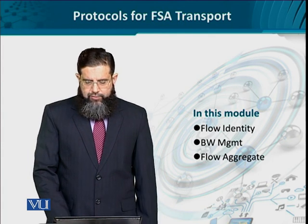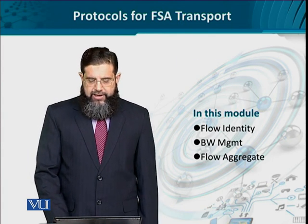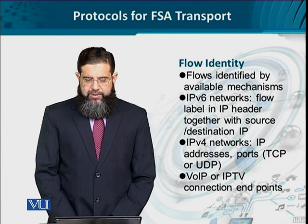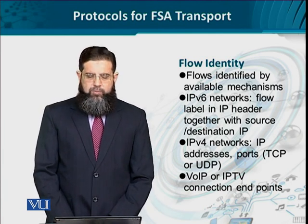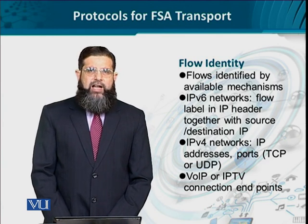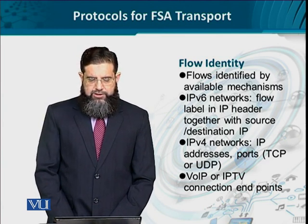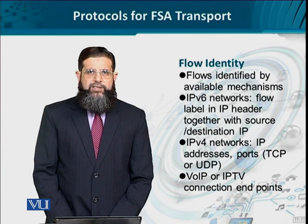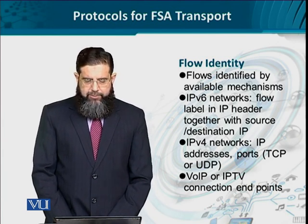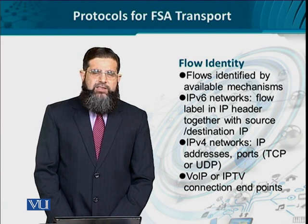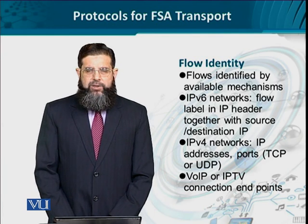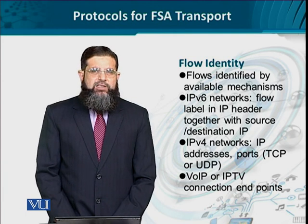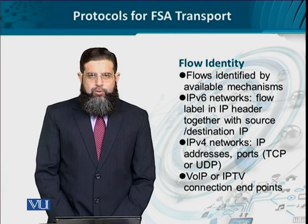Let's start with the flow identity, followed by bandwidth management, and we'll recap the flow aggregate that we already know. The flow identity is basically the identification of an individual flow. Support is available in IP networks for both IPv4 and IPv6. Specifically, IPv6 provides a flow label — an octet available in the IP header — which is concatenated with the source and destination IP addresses, helping identify the flow, and this is then stored in the flow aggregate table.